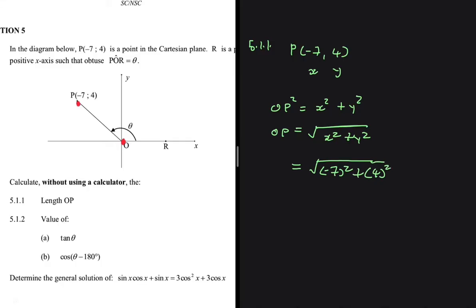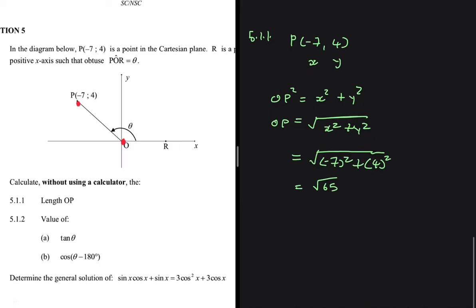If you put that in your calculator, you should get a square root of 65 as the length of OP.